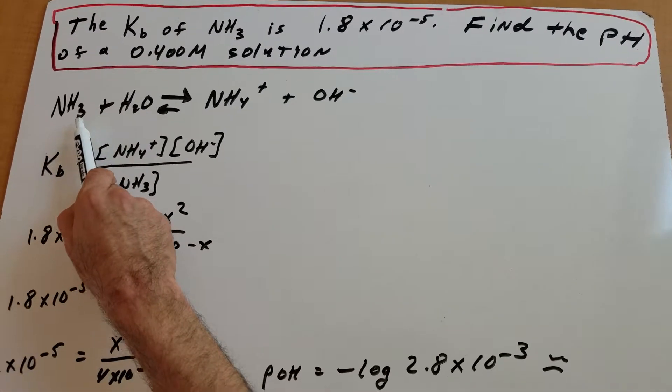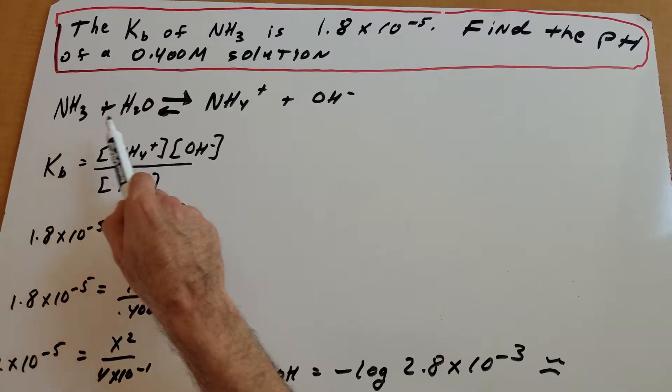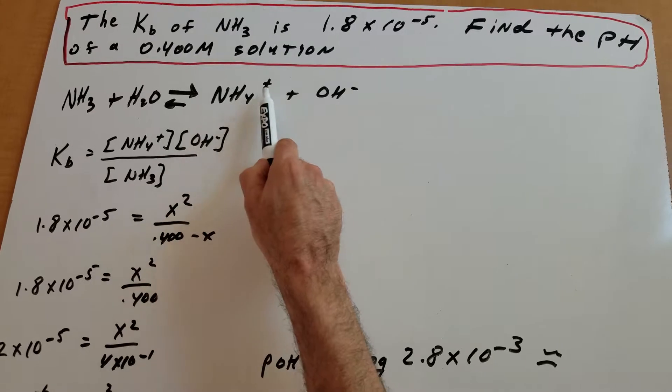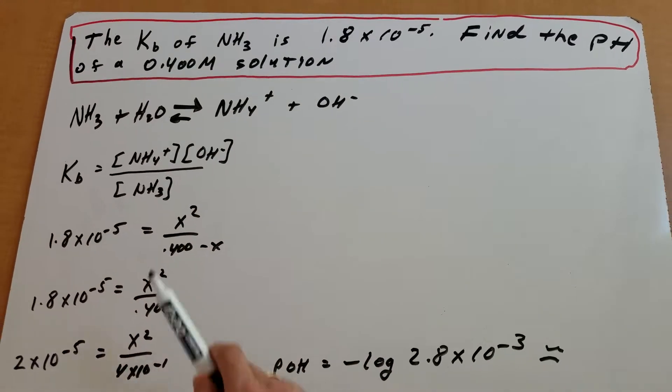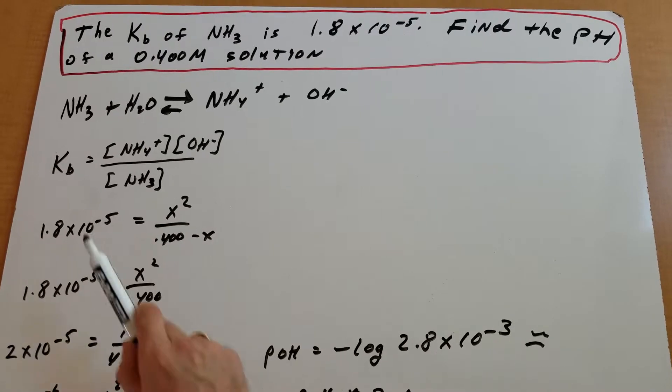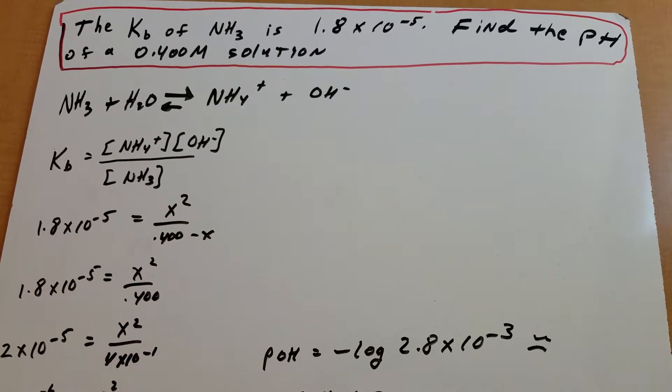Since the ammonia is a base, since we give you the Kb, it accepts an H. So the base becomes the conjugate acid, NH4+, and since this lost, becomes OH-. So the first thing we wrote the acid-base reaction out. Ammonia plus water gives the ammonium ion plus the hydroxide ion.